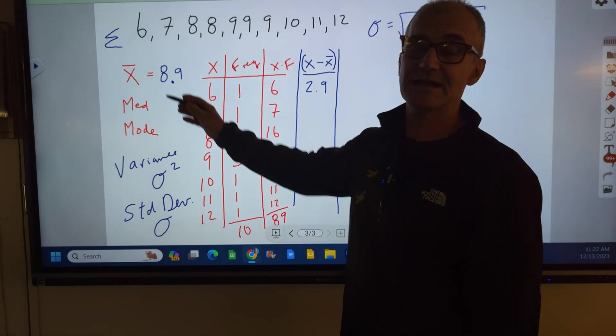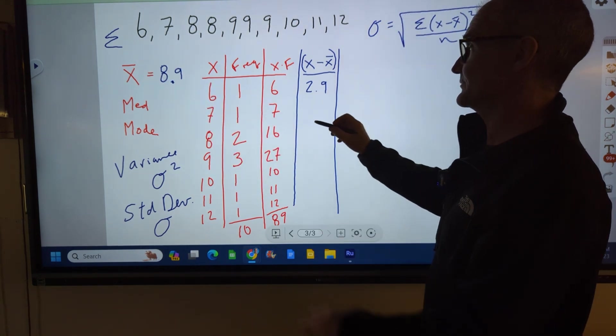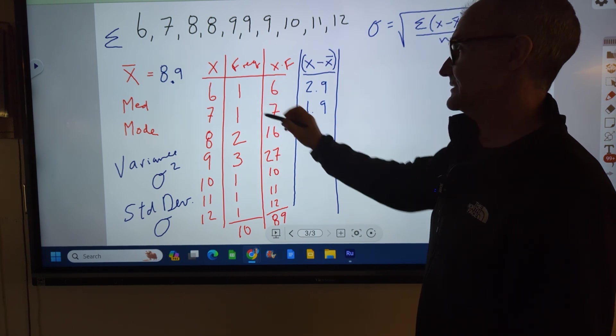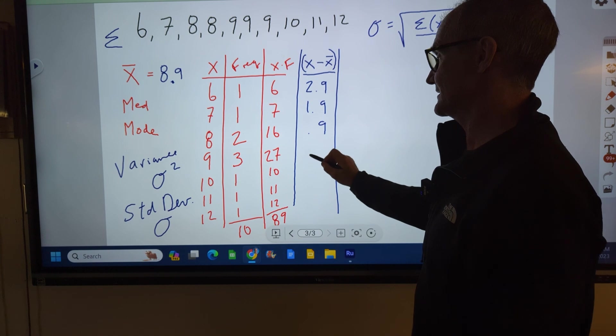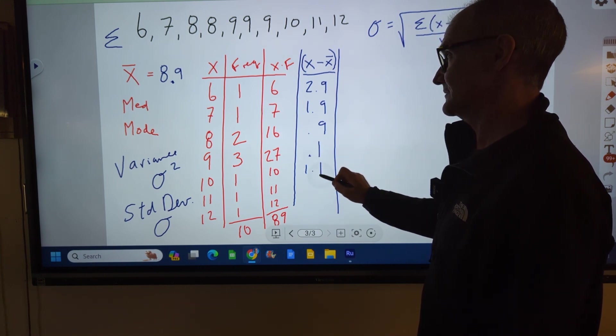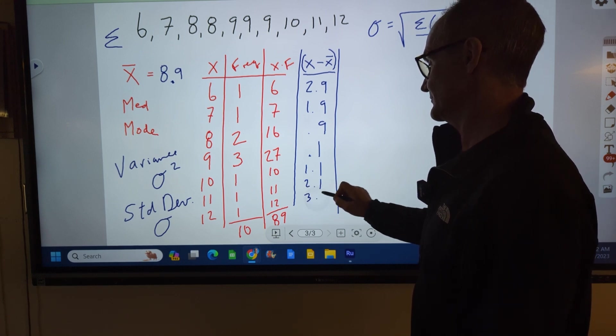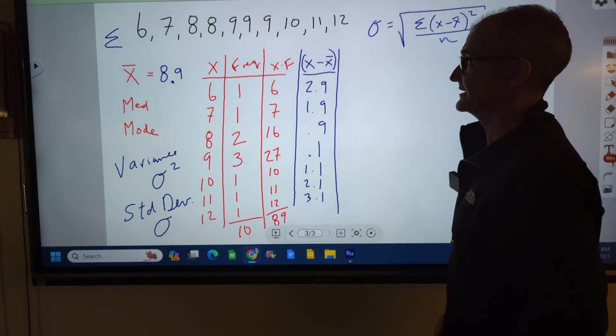7 minus my average, 7 minus 8.9 is 1.9. 8 minus 8.9 is 0.9. 9 minus 8.9 is 0.1. 1.1, 2.1, 3.1. So those are my deviations.